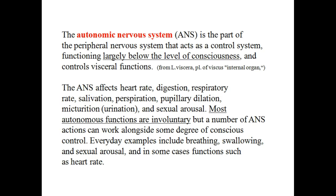The autonomic nervous system is the part of the peripheral nervous system that acts as a control system functioning largely below the level of consciousness and controls visceral functions. The ANS affects heart rate, digestion, respiration rate, salivation, perspiration, pupillary dilation, micturition, and sexual arousal.